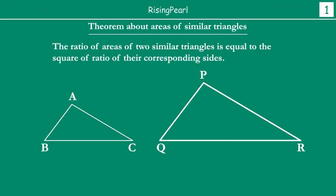Now friends, in the last webisode, for the first time, we looked at one special theorem regarding the areas of similar triangles. The theorem states: the ratio of areas of two similar triangles is equal to the square of ratios of their corresponding sides.